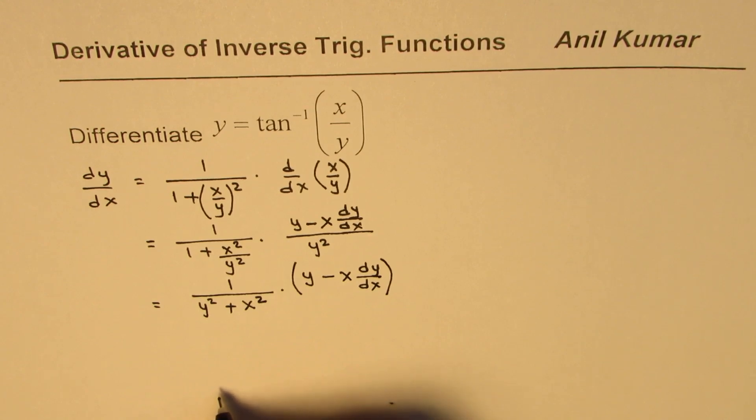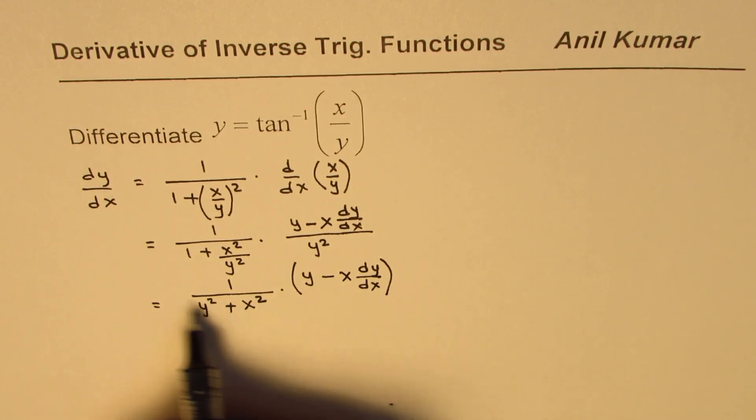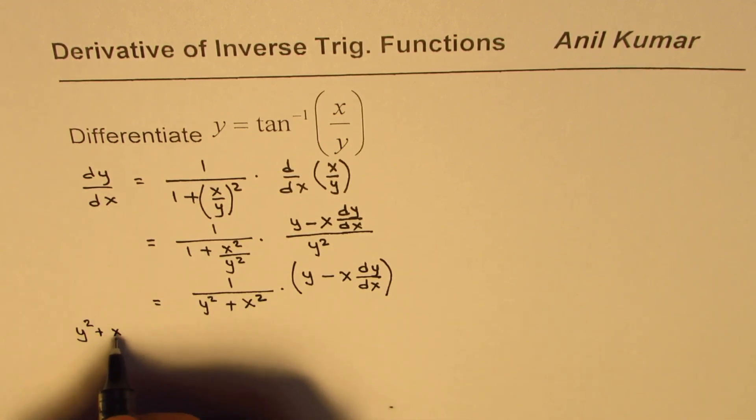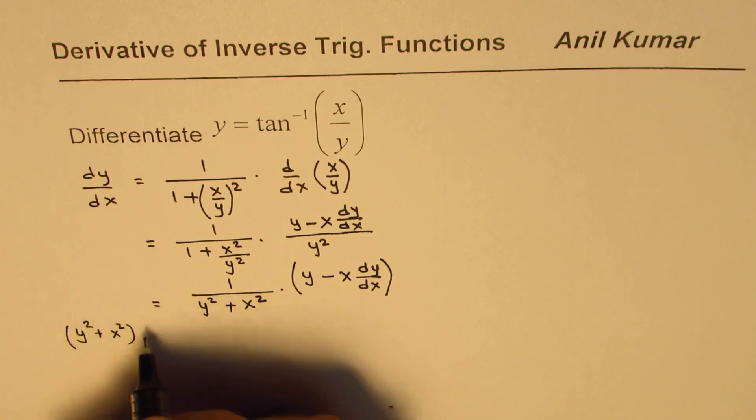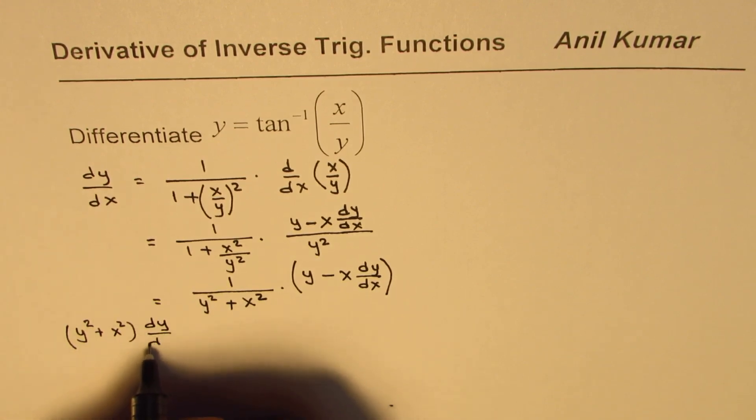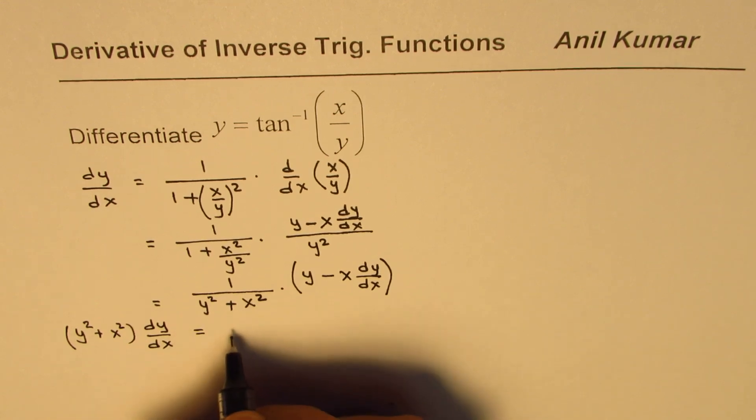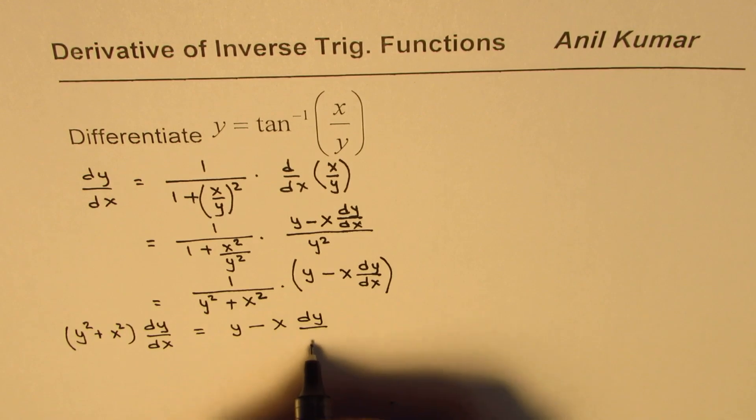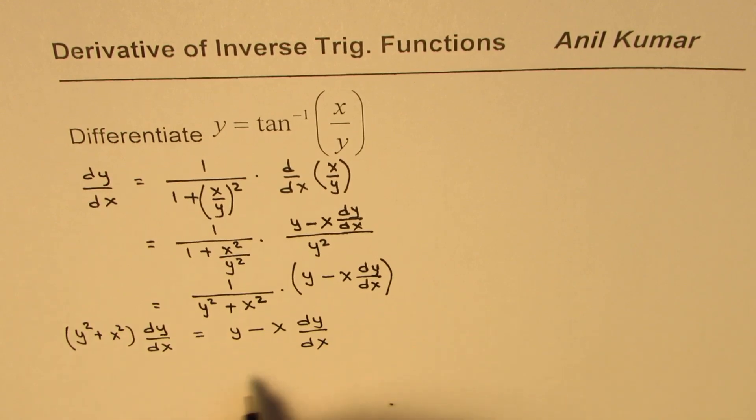Now at this stage we can actually rearrange. We'll multiply this to the left side, so we get y squared plus x squared times dy/dx equals to y minus x dy/dx.